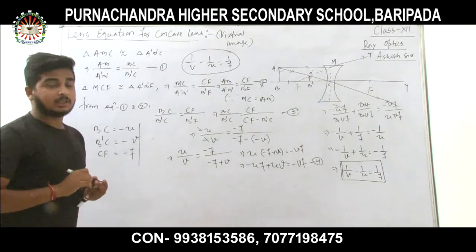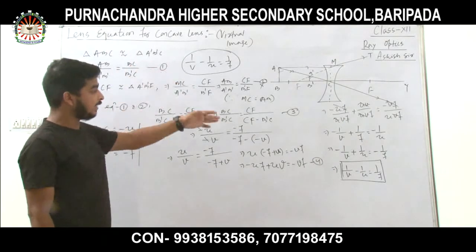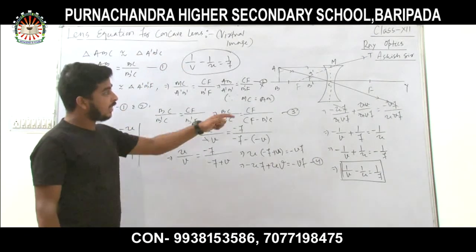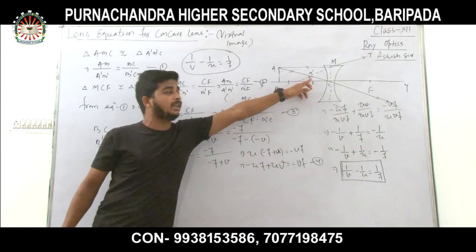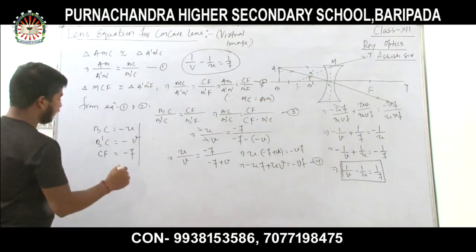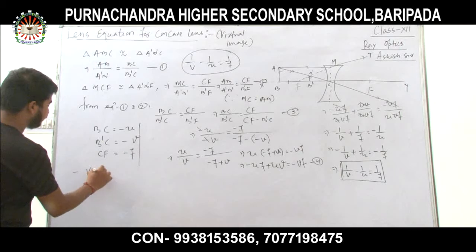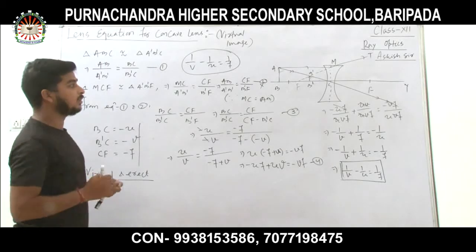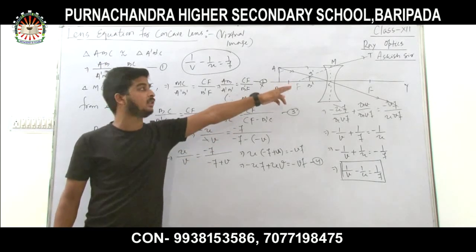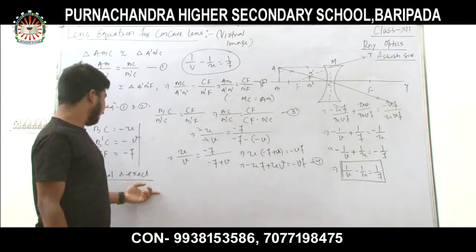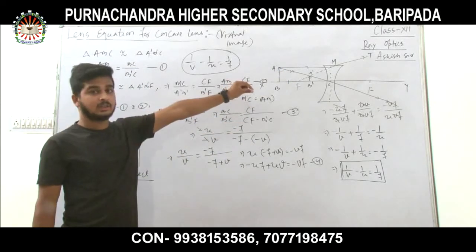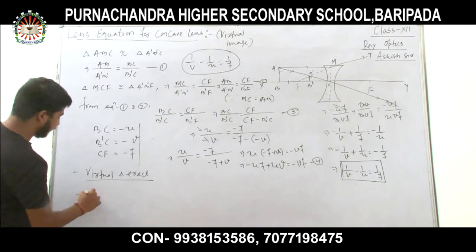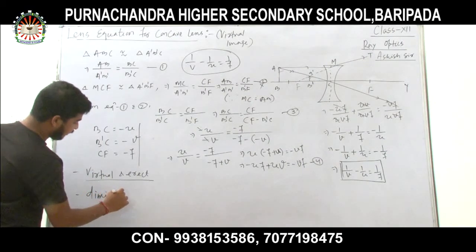This is the Lens Equation — the same form derived for a convex lens, and here derived for a concave lens. The image formed is virtual and erect because we backtraced the path of light, and also diminished — the size of the image is smaller than the size of the object.